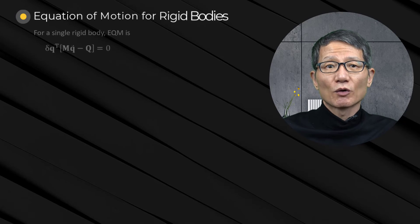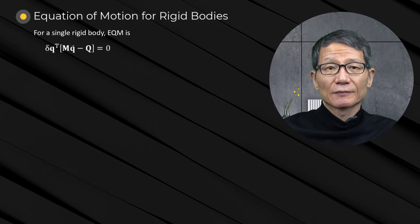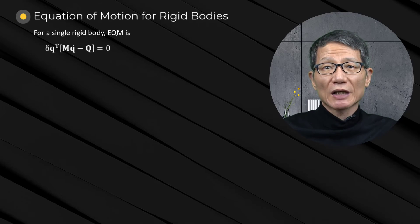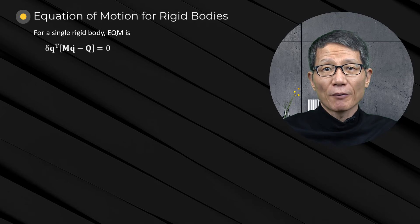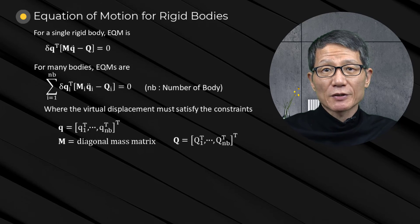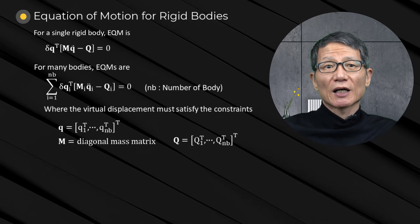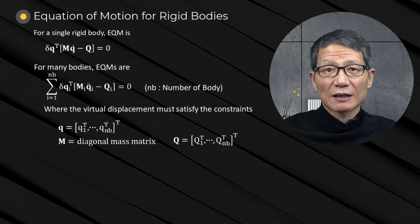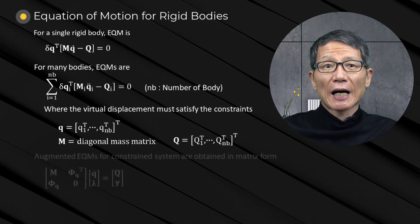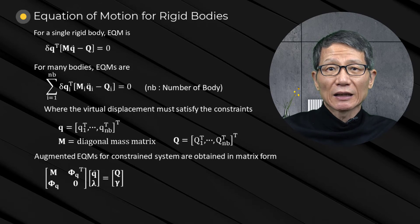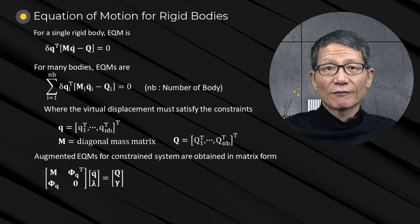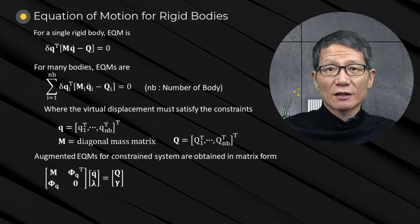Equations of motion for rigid bodies. The equation of motion for a single rigid body is given in the variational form, where the variation of the generalized coordinates must satisfy the kinematic constraints. Applying the equations of motion for one body to many bodies gives the equations of motion for the whole system.